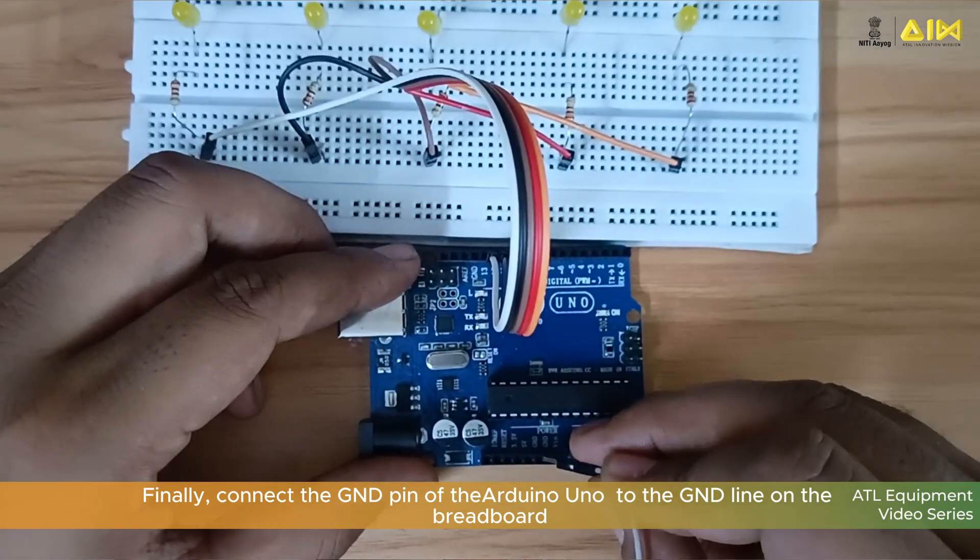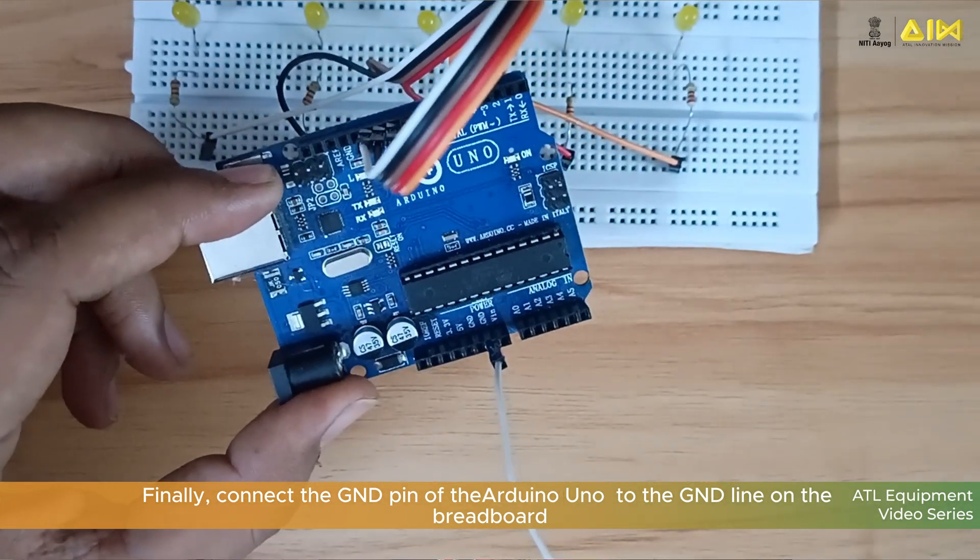Finally, connect the ground wire of Arduino Uno to the GND line on the breadboard.